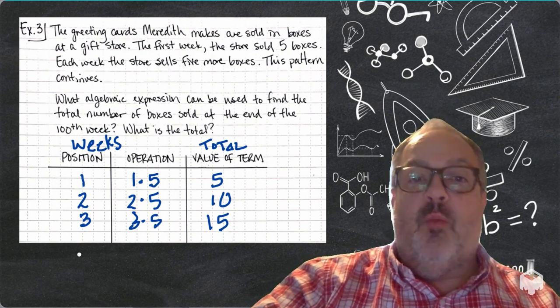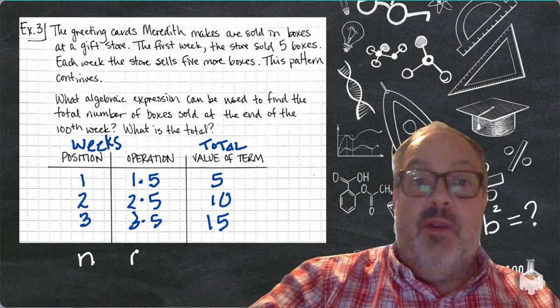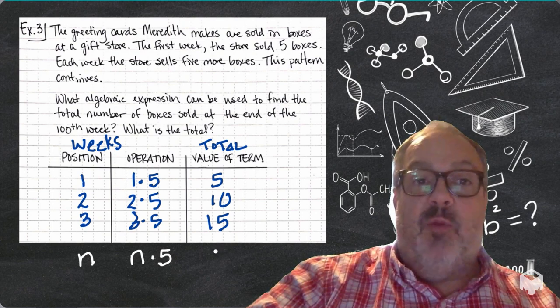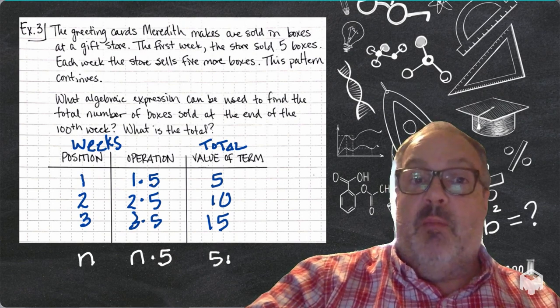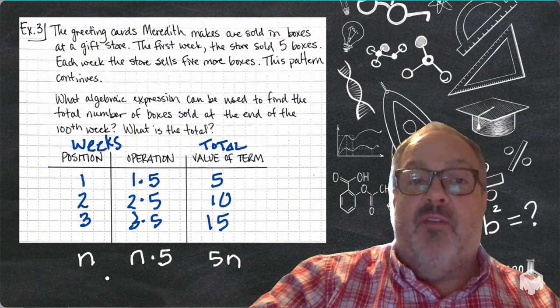Now, if I wanted to find out the boxes sold for any number of weeks, I can think of the weeks as being n. I'm going to multiply n times five, and I'm going to get five n.